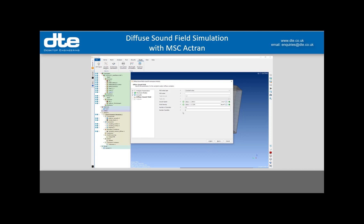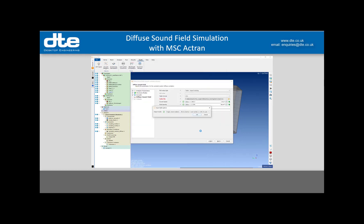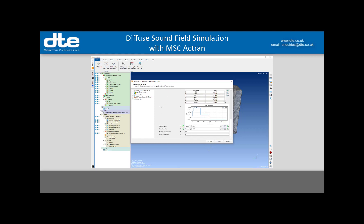The next section is all about my PSD. I can import an existing file — my format is comma-separated values. I browse and load my PSD file. I need to set the reference dB, which is 2×10⁻⁵. Scrolling down we can see the PSD plotted. It's also asking for sound speed and fluid density. The number of samples and number of parallels relates to how the software sets up the inbound sound waves used in the frequency response to represent the diffuse sound field. I'll leave those at defaults.